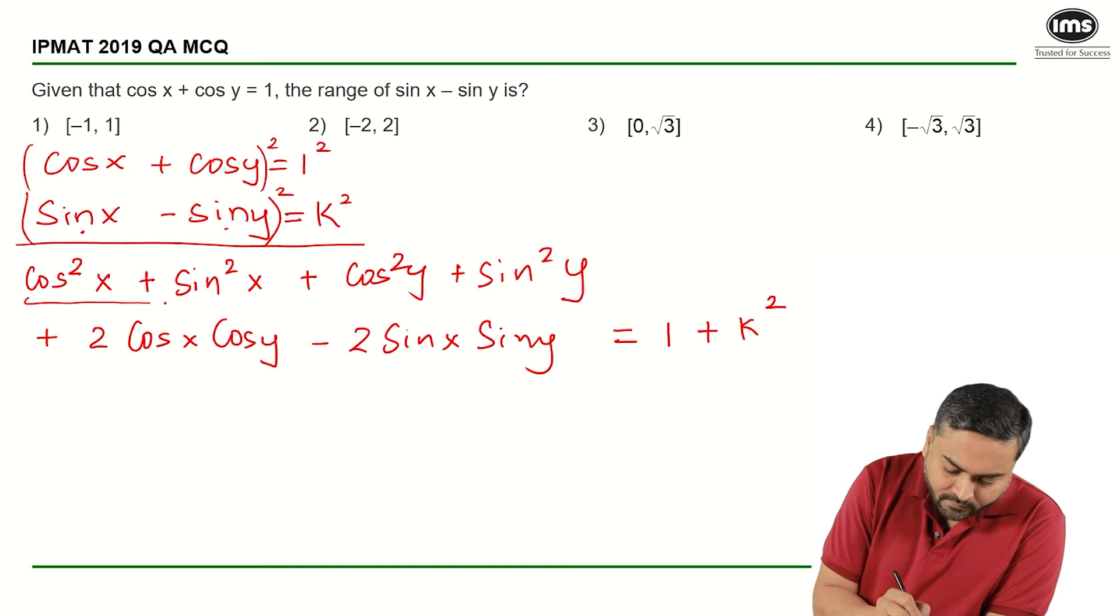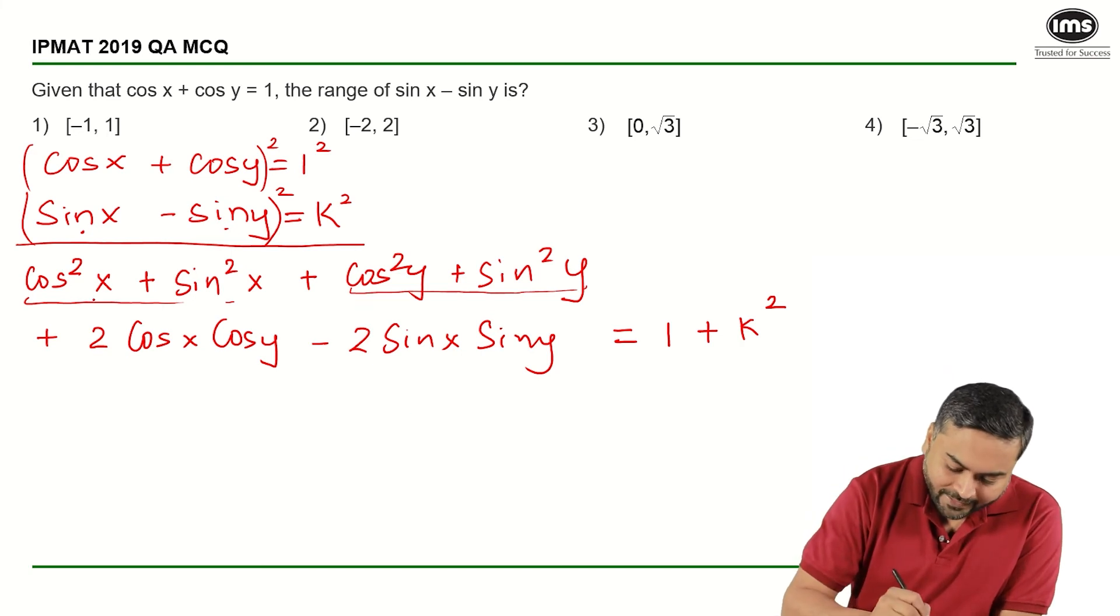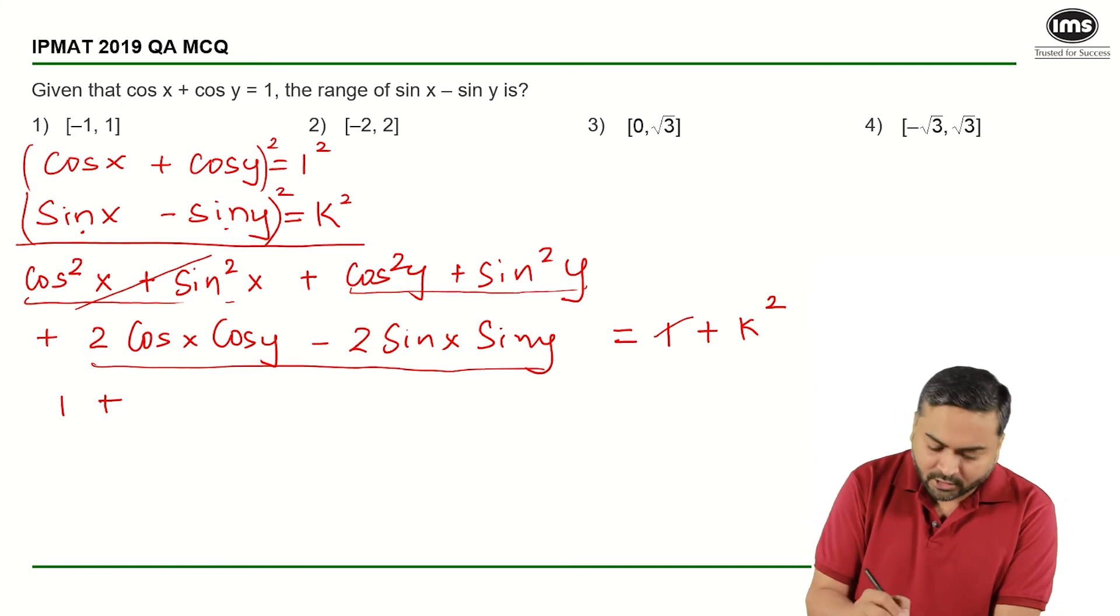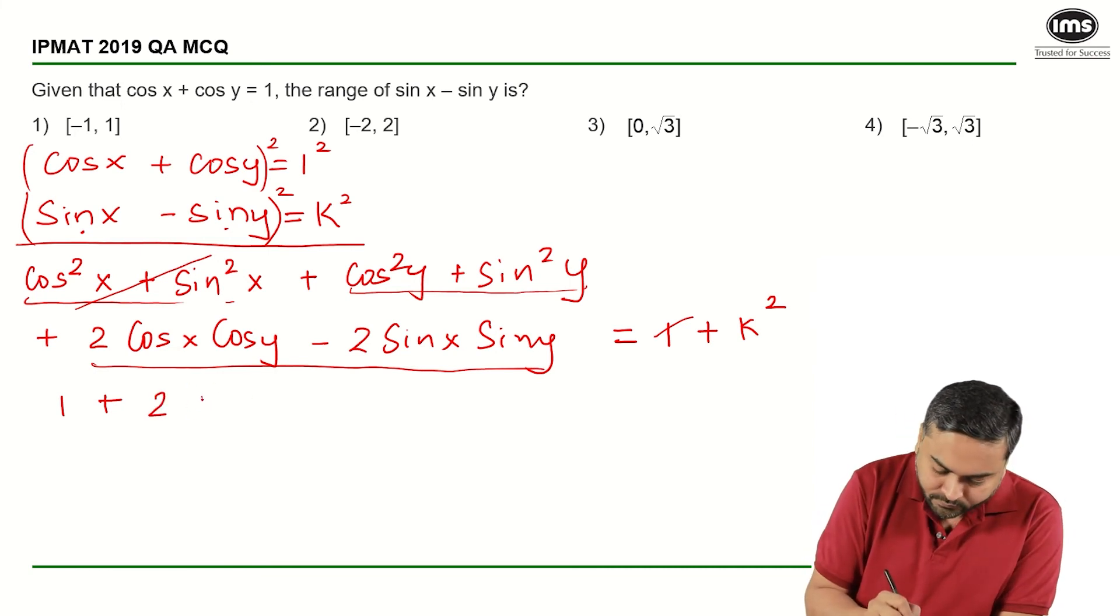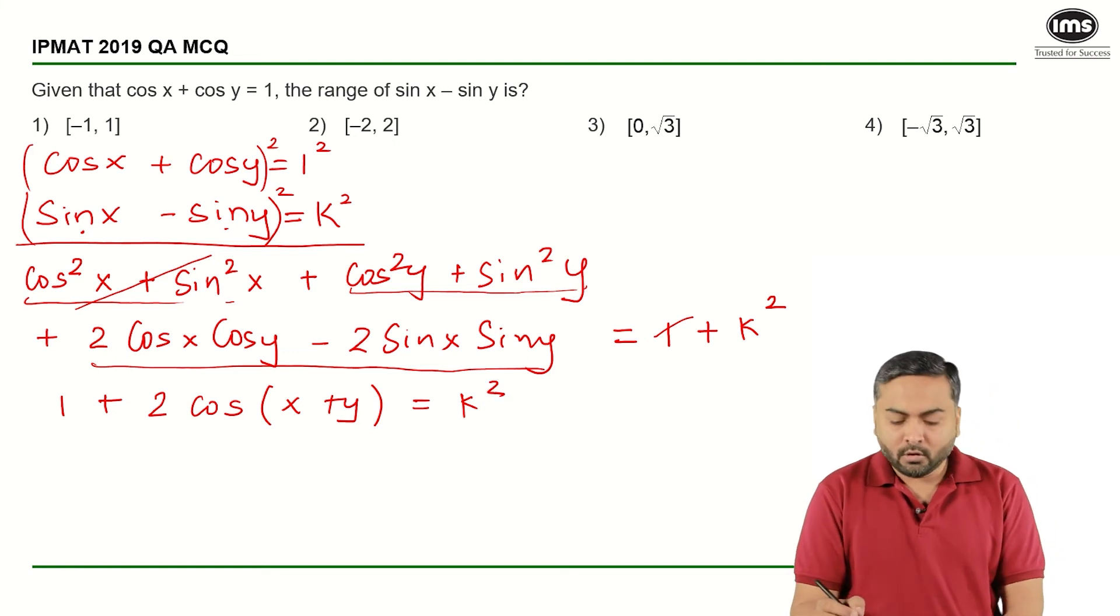This is equal to 1, and this is equal to 1, right. So I can cancel this value within this one. I will be left with 1 plus this entire term. Now this is nothing but 2 times cos(x + y), and that equals k².